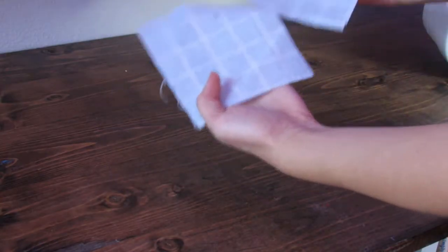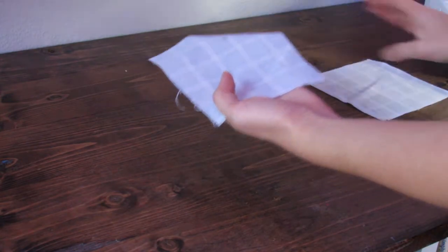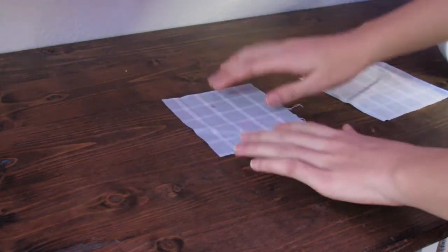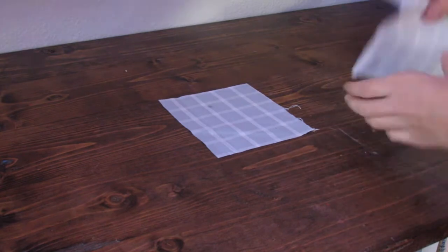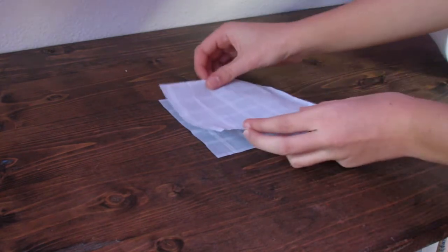Next you're going to take your two pieces of fabric and put one good side facing up and the other good side facing down.